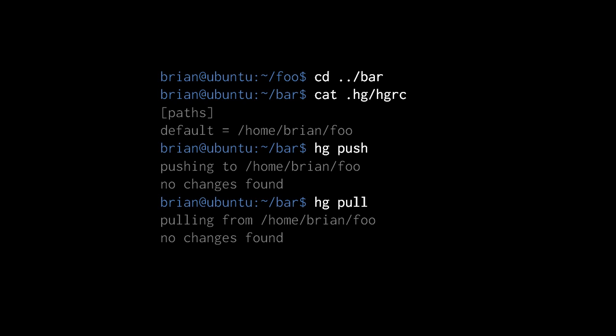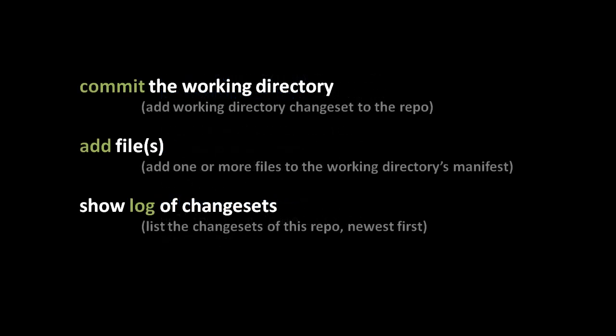Now we have init and clone for creating repos and push and pull for exchanging change sets. But what about actually creating change sets? The primary command for that is commit — create a change set from the current state of the working directory and add it to the repo. A critical thing to understand is that the working directory has its own manifest, a list of all files included in this change set in waiting. Creating new files and invoking hg commit is not sufficient — you must explicitly add them to the manifest. The working directory inherits the manifest from its parent change set, so you only need to add files which are new.